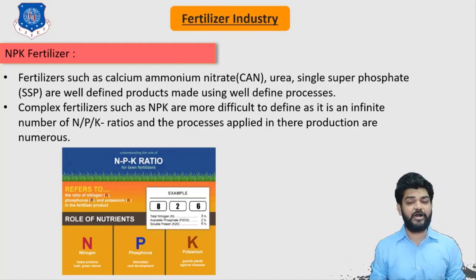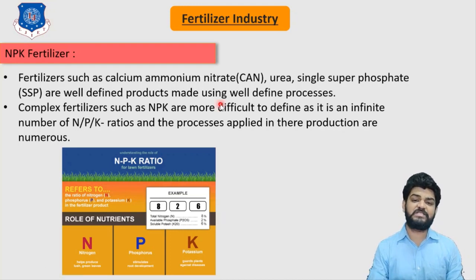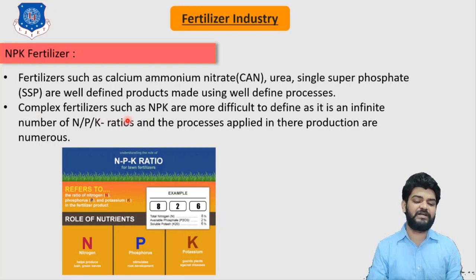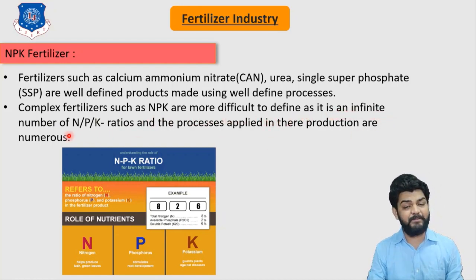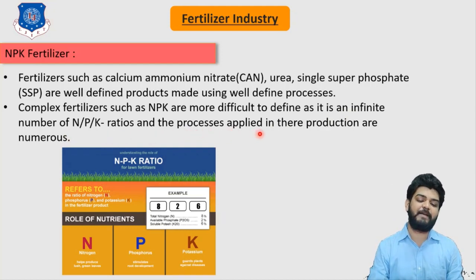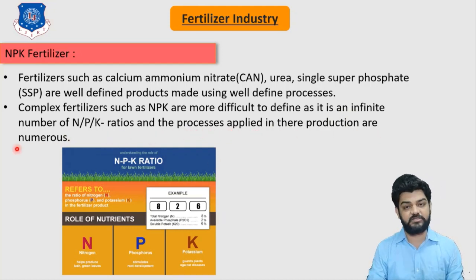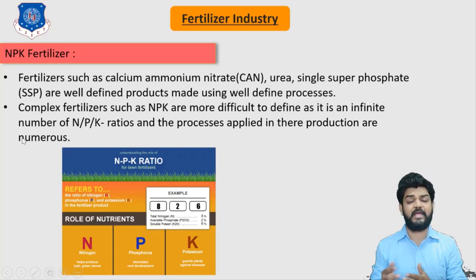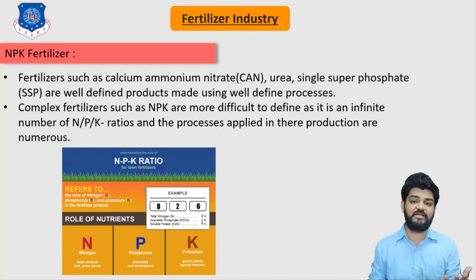Processes for such products are also well defined. But when it comes to the specific type of NPK fertilizer, it is a more complex process. Complex fertilizers such as NPK are more difficult to define because there is an infinite number of NPK ratios, and the processes applied in their production are numerous. This ratio of NPK can differ in many ways, and their production methods also differ.